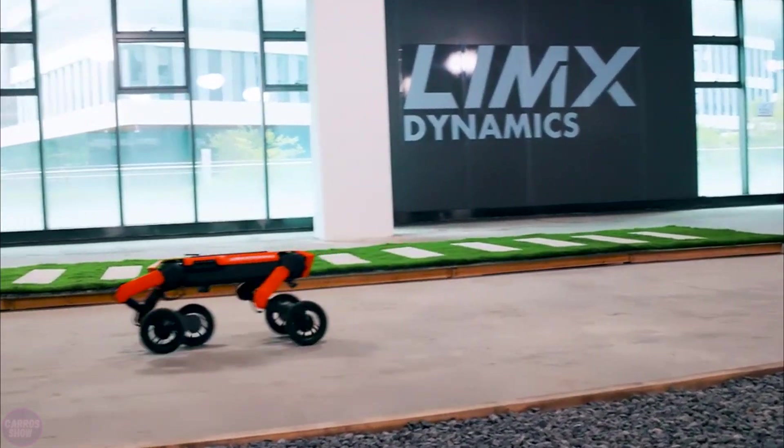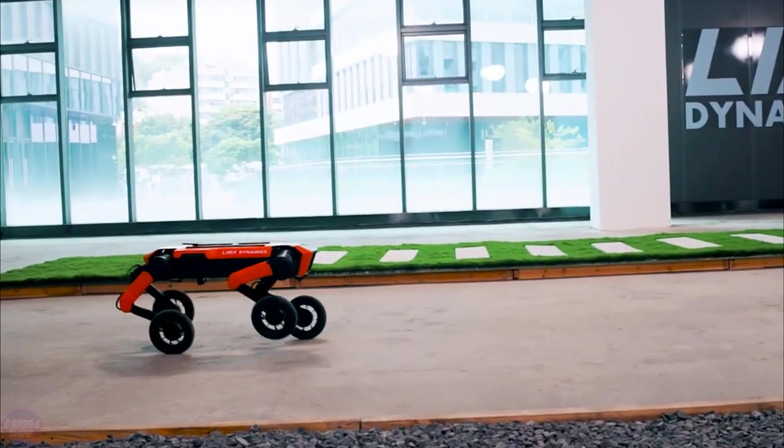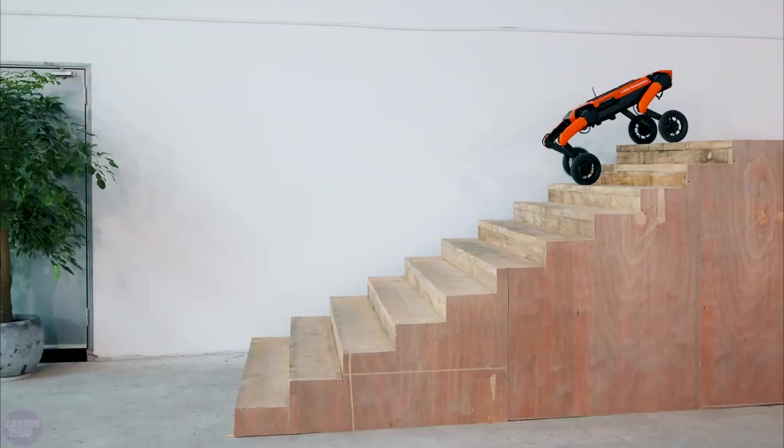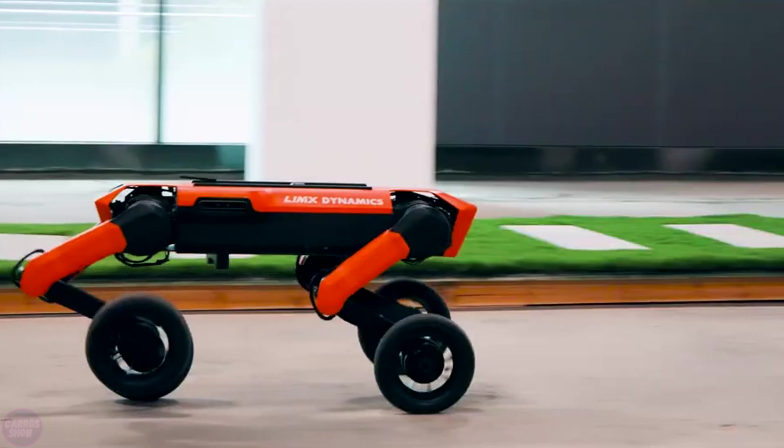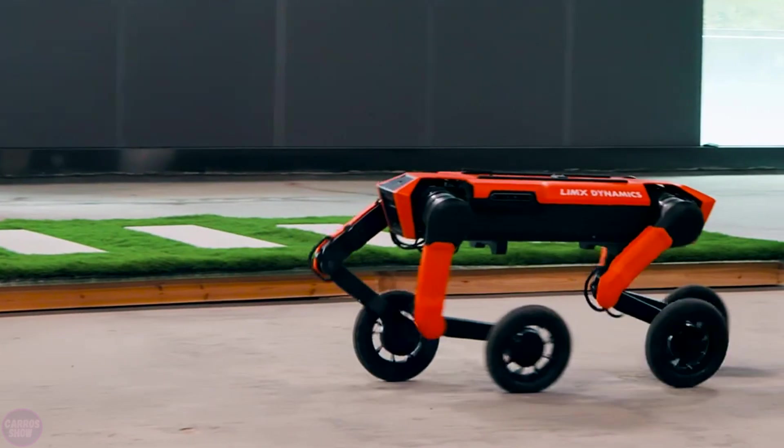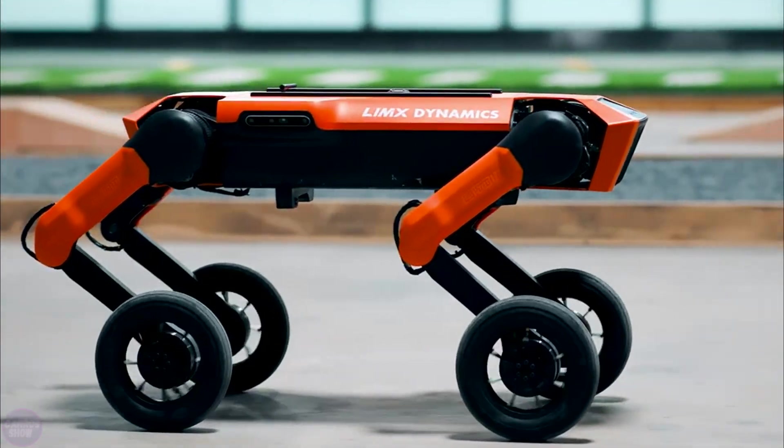Moreover, if necessary, it can bend its front or rear legs in such a way that the body maintains a horizontal position when moving on inclined surfaces. This feature may come in handy, for example, if the robot is carrying an unsecured load.